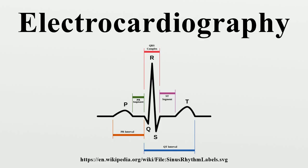A standard 12-lead ECG report shows a 2.5-second tracing of each of the 12 leads. The tracings are most commonly arranged in a grid of four columns and three rows. The first column is the limb leads, the second column is the augmented limb leads, and the last two columns are the precordial leads.